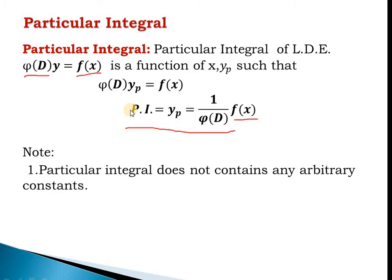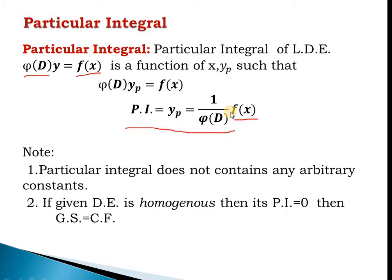Note that Particular Integration does not contain any arbitrary constants — arbitrary constants are contained in the Complementary Function. In PI there is no arbitrary constant, so even if it includes integration, we do not consider any constant term. Second, if our differential equation is homogeneous, meaning f(x) = 0, then PI = 0. Operating 1/phi(D) on 0 gives 0, so particular integration is also 0, and the general solution equals the complementary function.